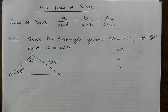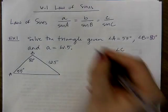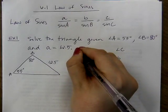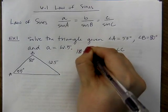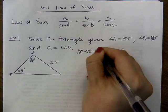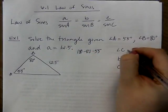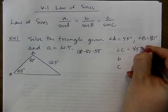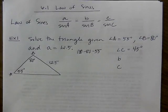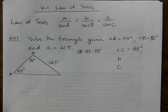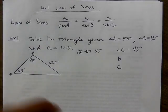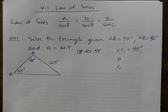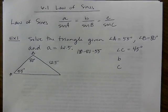Angle C would be the easiest to solve for first — there are 180 degrees in a triangle, so we subtract the two given angles, leaving us with 45 degrees. Any time you're solving a triangle, it's always important to use the given information rather than information you found, if possible, because what if you subtracted wrong? Use only the given information when you can.